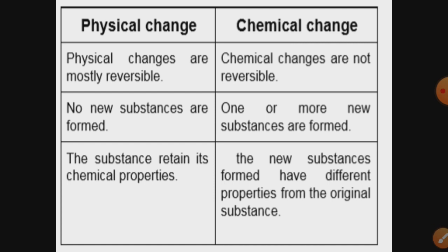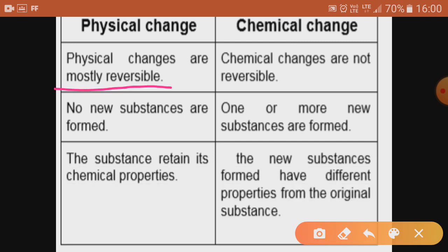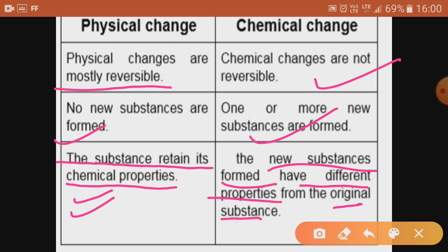In this slide you can see the difference between physical and chemical changes. Physical changes are mostly reversible, though a few are irreversible. No new substance is formed and the substance retains its chemical property. In chemical changes, they are irreversible, new substances are formed, and the new substance has different properties from the original — the substance no longer retains its original property because entirely new substances are formed.